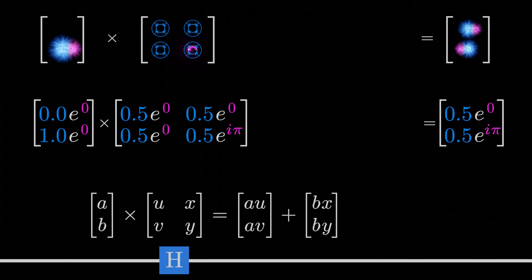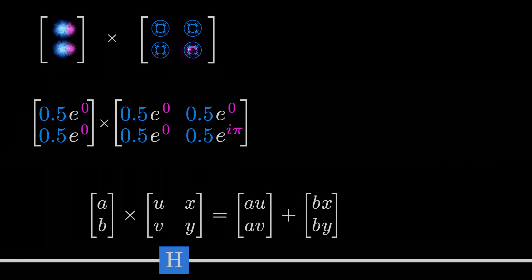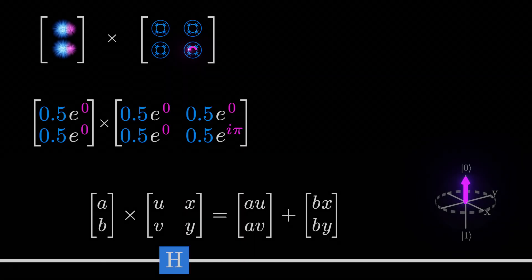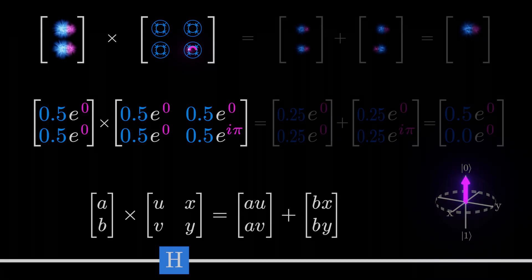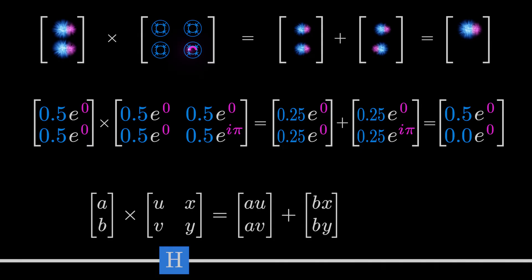So far, everything looks good. Let's now try taking the superposition with matching phases and passing it back through the Hadamard gate. Last time, we saw that this should convert it back into a zero. However, we currently get a very strange result. A qubit that is 50% likely to be 0 and 0% likely to be 1, in clear violation of the basic rules of probability.